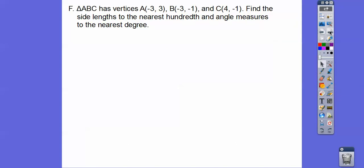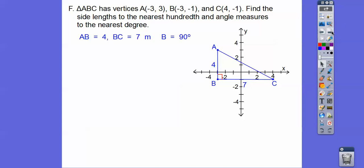Alright. So here we go. So triangle ABC has vertices A(-3, 3), B(-3, -1), and C(4, -1). Find the side lengths to the nearest hundredths and the angles to the nearest degree. Okay. So let's go ahead and graph these guys. There it is. Alright. Good. It's a right triangle. So once I find one of these, I can figure out the other one right there. Okay. Put the lengths in there. So we know that right there.